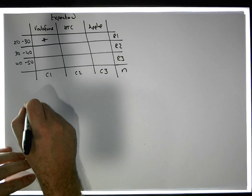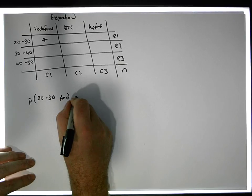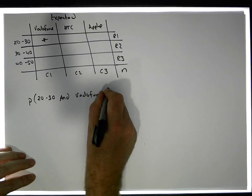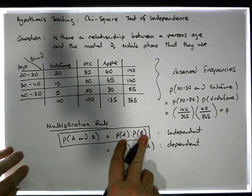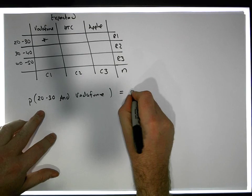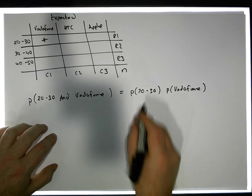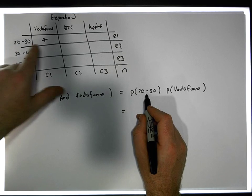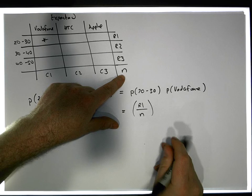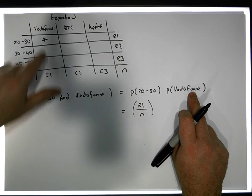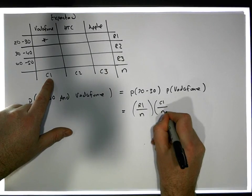What is the probability that a person selected is 20 to 30 years of age and uses Vodafone? If we assume independence, it's the product of the individual probabilities — the probability they're 20 to 30, times the probability they use Vodafone. The probability of being 20 to 30 is r1 over n, and the probability of being a Vodafone customer is c1 over n.